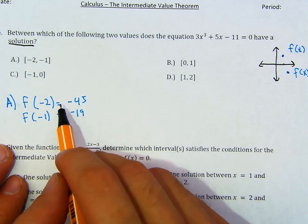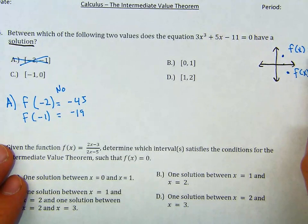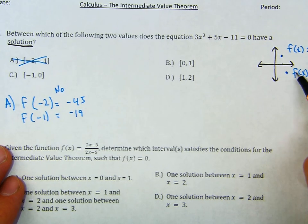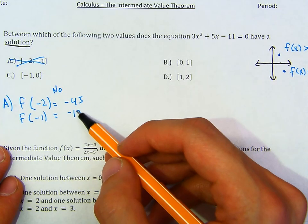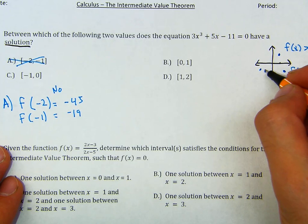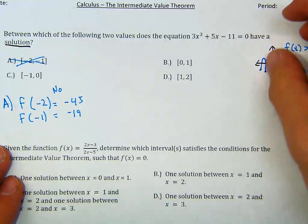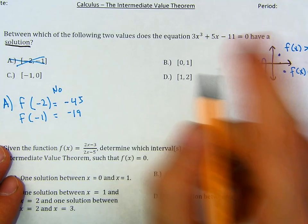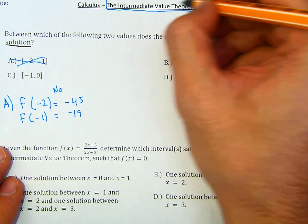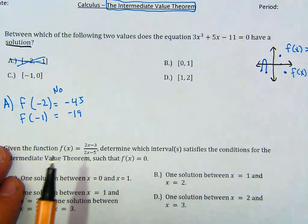The answer is no. This does not work because one of the y values has to be positive and the other has to be negative. Notice that if we have two negative y values — if I have two points that are both below the x-axis — it doesn't guarantee a root. It could somehow cross, but it doesn't guarantee it. And that's what's so strong about the intermediate value theorem.